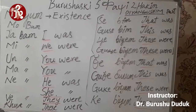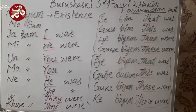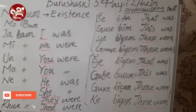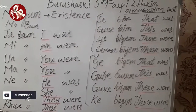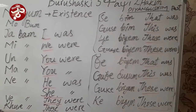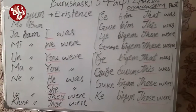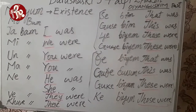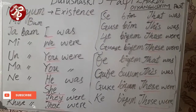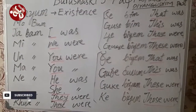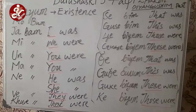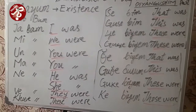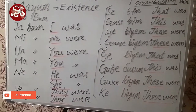First of all, for human beings we will use pronouns with the helping and linking verbs — how we will use them — then later on for non-living beings and for animals. So first of all we will go to the left side of the column. It's very interesting because in English we have few helping verbs like 'was' and 'were' for the past, but in Burushaski there are many, many helping verbs.